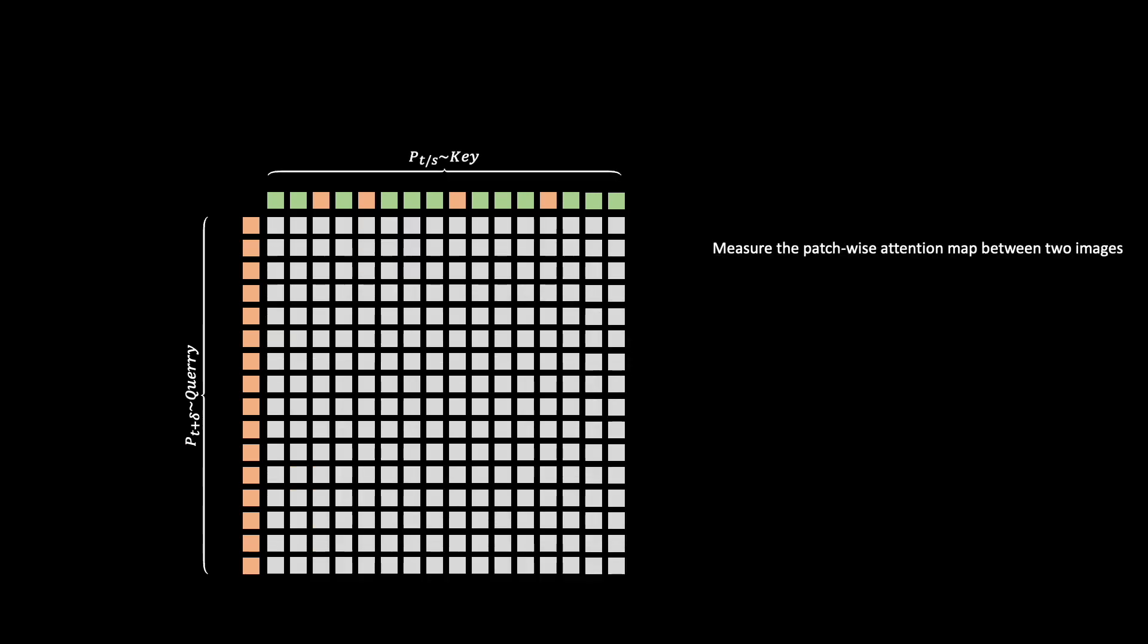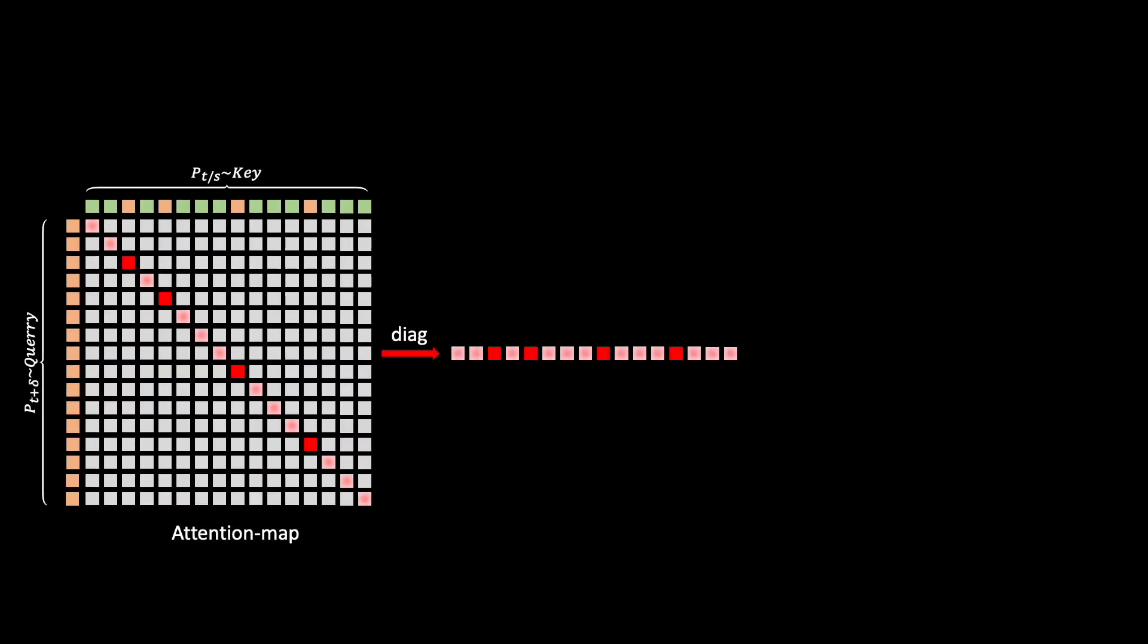They can be represented as a sequence of patches or a sequence of features. After that, we measure the patch-wise attention map between two images. The diagonal values represent the correlation of two patches at the same position. We take the diagonal values as indicating which swapped patches the model needs to focus on.